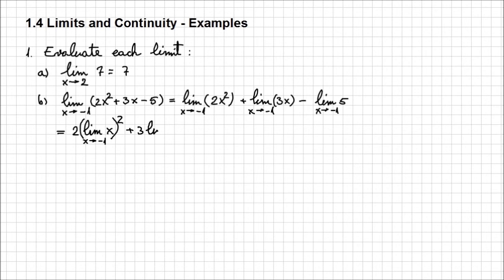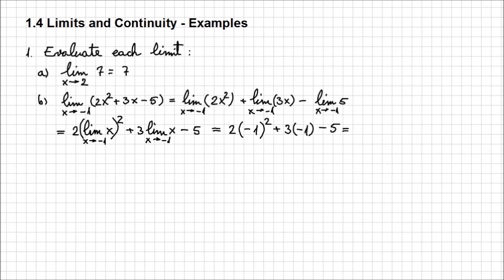The next limit is easier — it's just a constant multiple, 3 times x, so 3 comes out, giving 3 times the limit when x approaches minus 1 of x. The limit of the constant 5 is just minus 5. Now, the limit of x when x approaches minus 1 is minus 1, so we substitute: 2 times (minus 1) squared plus 3 times (minus 1) minus 5, which evaluates to minus 6.